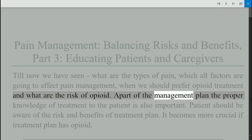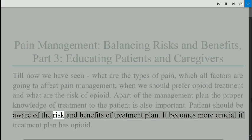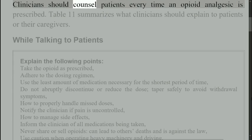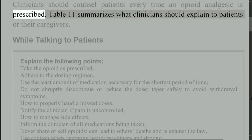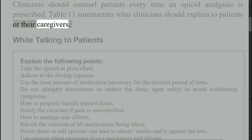As part of the management plan, proper knowledge of treatment given to the patient is also important. Patients should be aware of the risks and benefits of the treatment plan. This becomes more crucial if the treatment plan includes opioids. Clinicians should counsel patients every time an opioid analgesic is prescribed. Table 11 summarizes what clinicians should explain to patients or their caregivers.